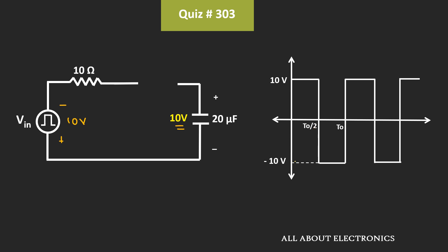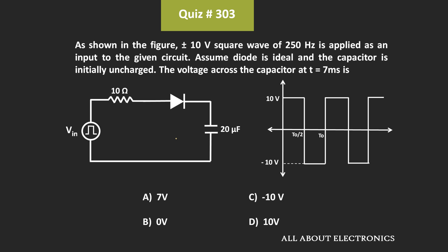That means if we see the voltage across the capacitor at 7ms, then it will be equal to 10V. So from this, we can say that for the given question, D is the correct answer.